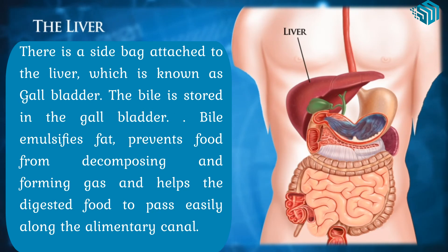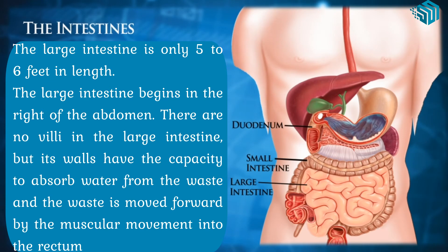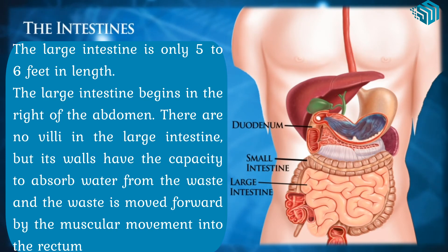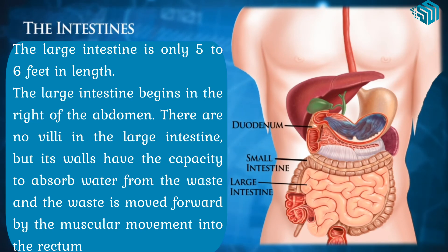Bile emulsifies fat, prevents food from decomposing and forming gas, and helps the digested food to pass easily along the alimentary canal. The large intestine is only 5 to 6 feet in length. It begins in the right of the abdomen. There are no villi in the large intestine, but its walls have the capacity to absorb water from the waste, and the waste is moved forward by muscular movement into the rectum.